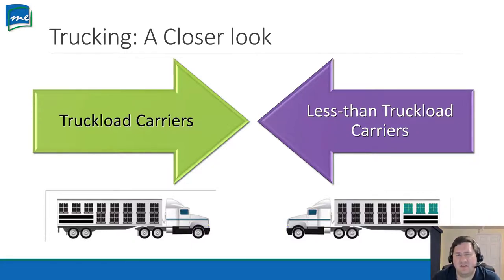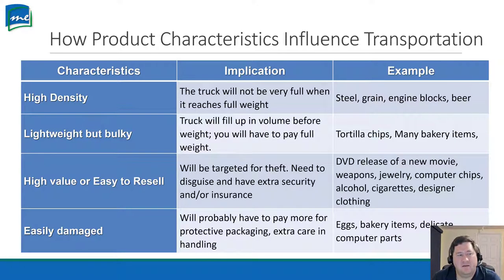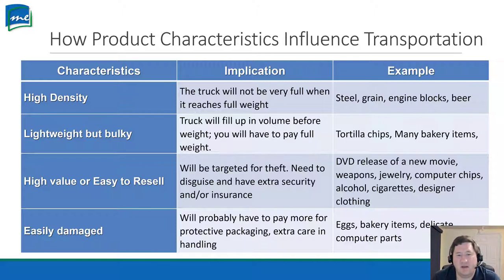What characteristics influence transportation? We have to look at our products: is it a high density product, lightweight but bulky, high value, easy to resell, or easily damaged? Different things mean different types of transportation. For high density, think about a truck shipping lead — it's heavy, so a small amount is very heavy, and the truck would reach its weight capacity before being full. Examples include steel, grain, engine blocks, and beer.